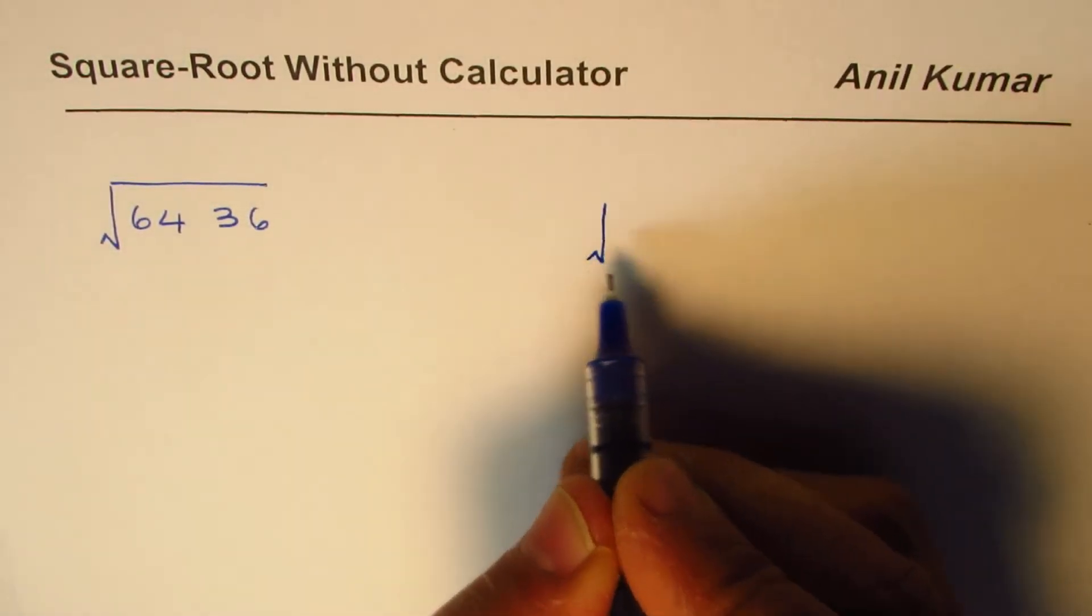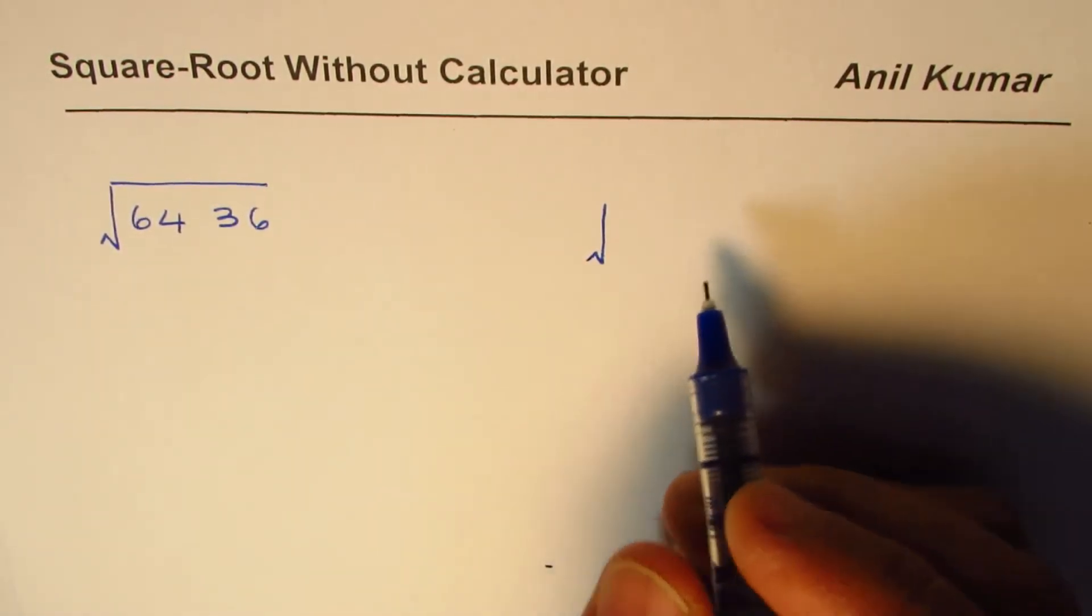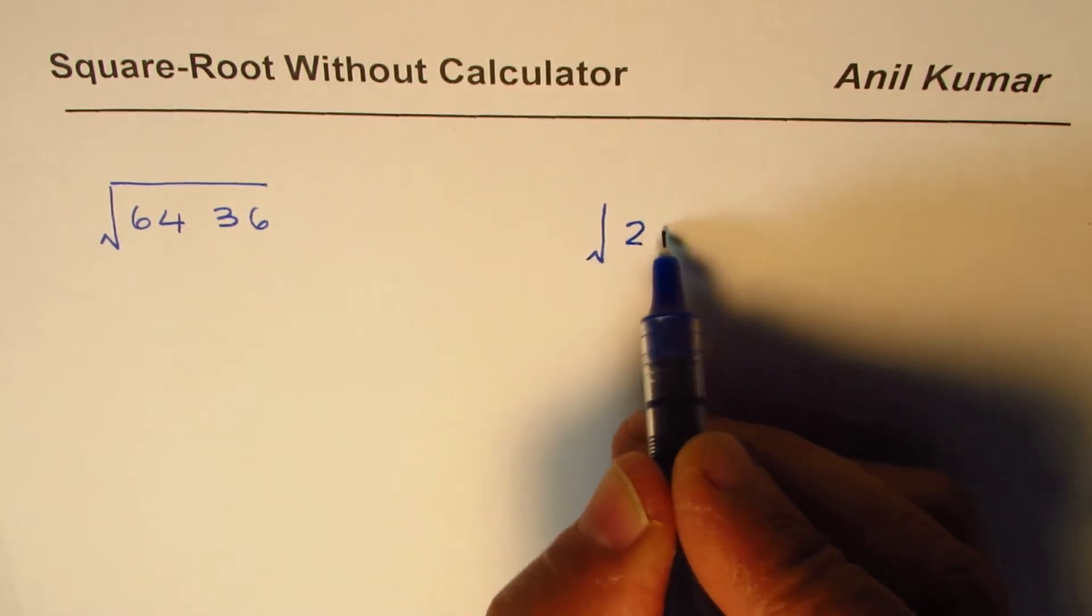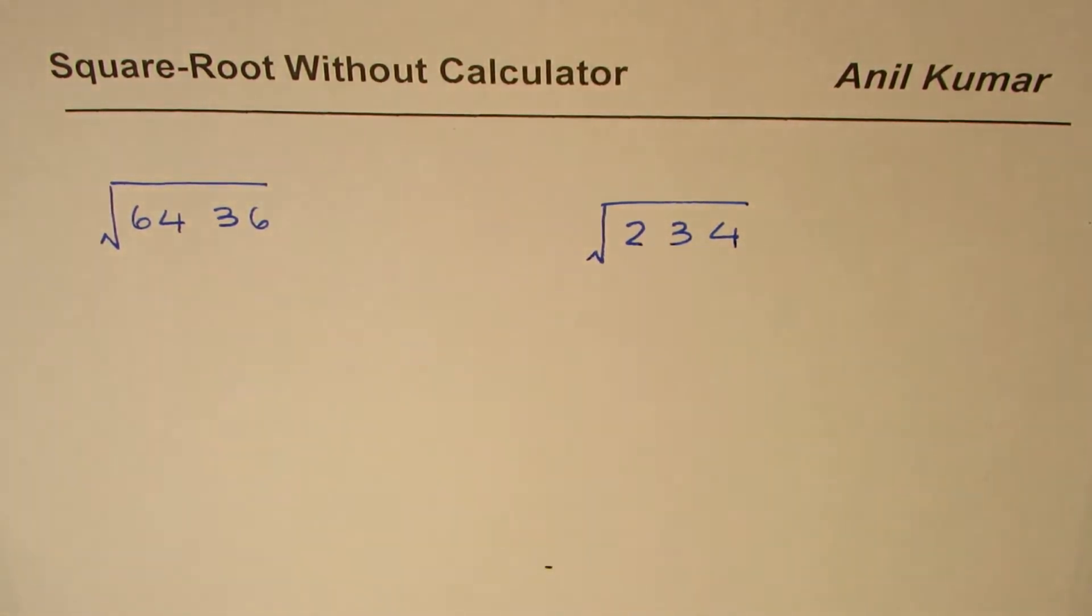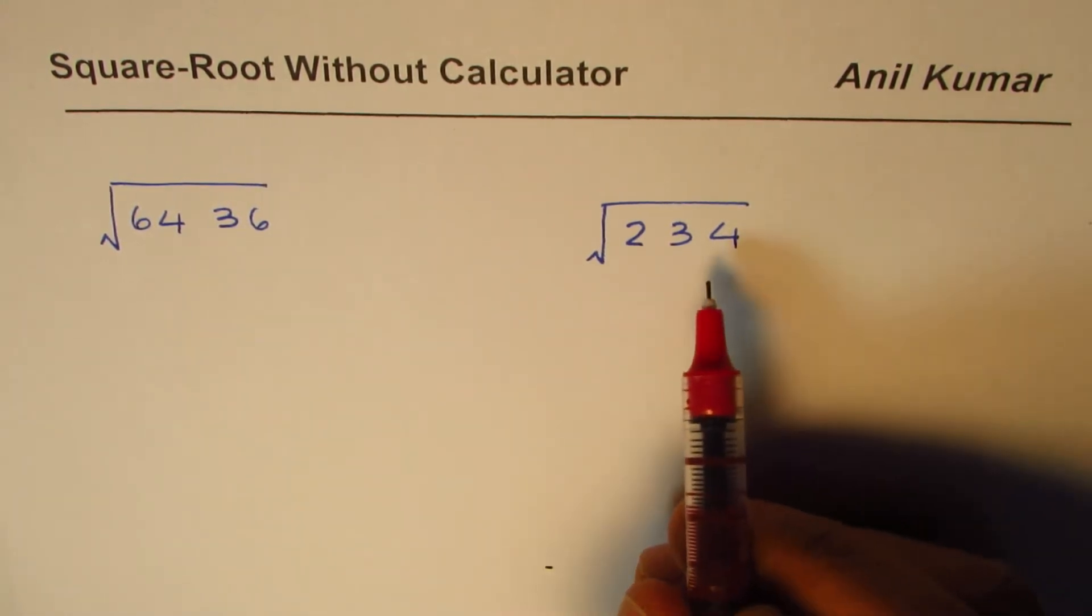And the second question was how to find square root of numbers where we have odd number of digits. Let's say 234 - there are three digits here, so these are odd number of digits. We'll take up these two examples and I hope that helps.